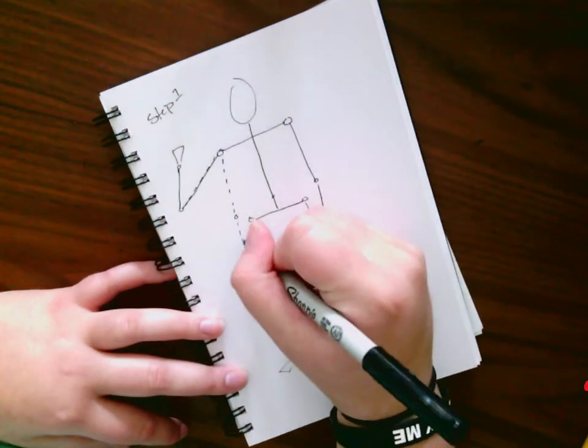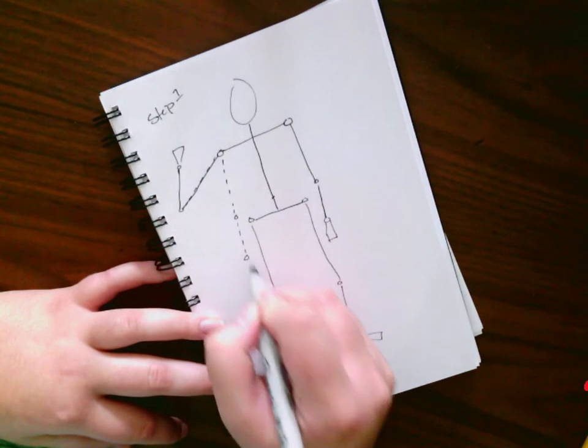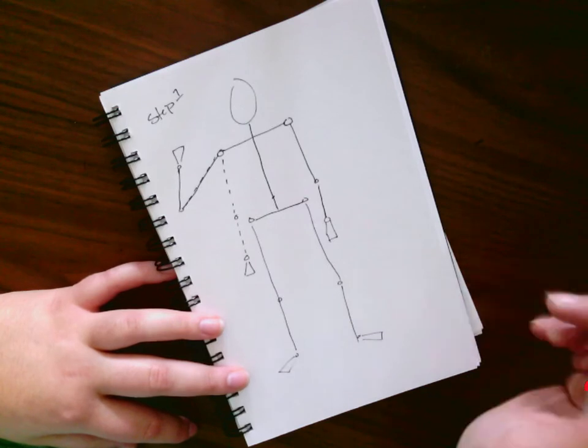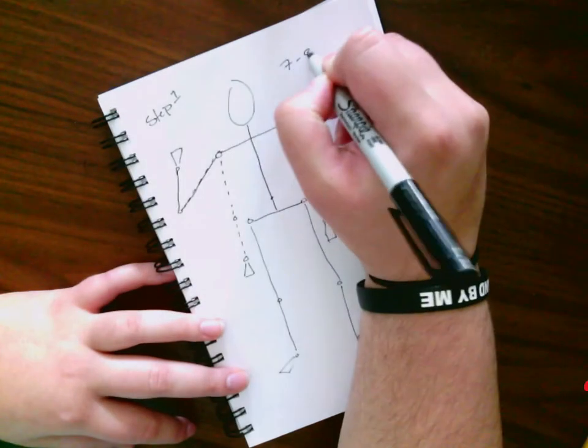So this one imaginarily would be down like this. Circle, and hand. Alright, this is our step one. People are seven to eight heads tall.